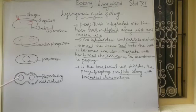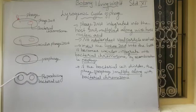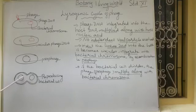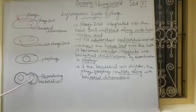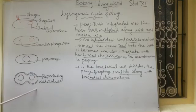If the bacterial cell divides, the prophage multiplies along with the bacterial chromosome and progeny cells are formed. Thus the release and multiplication of the bacteriophages takes place in the lysogenic cycle.